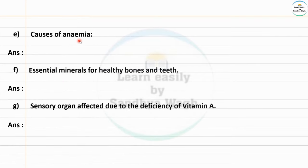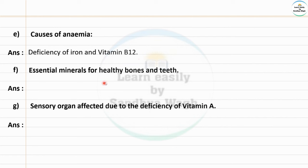Causes of anemia: deficiency of iron and vitamin B12 in the body causes anemia. Essential minerals for healthy bones and teeth are calcium and phosphorus. The sensory organ affected due to deficiency of vitamin A is the eyes.